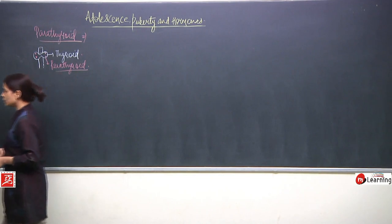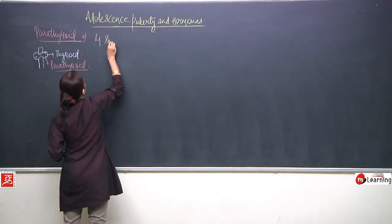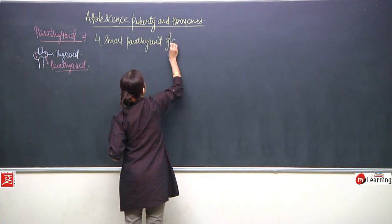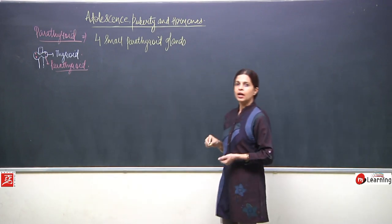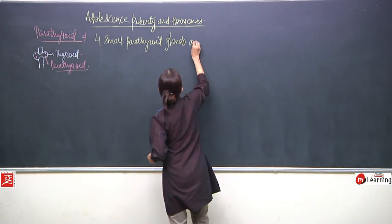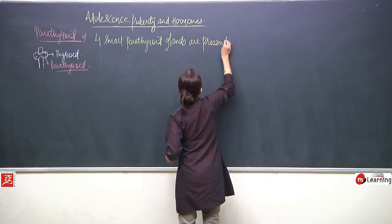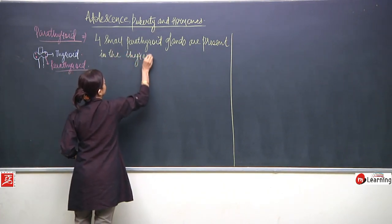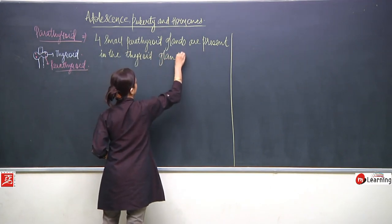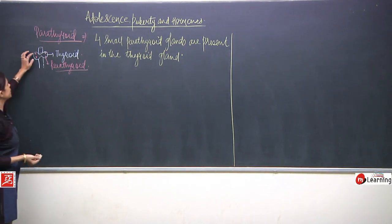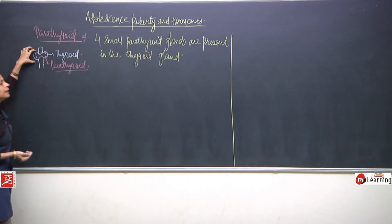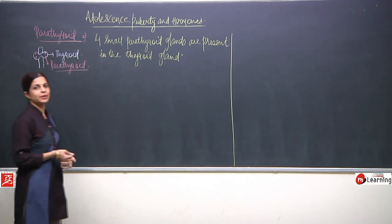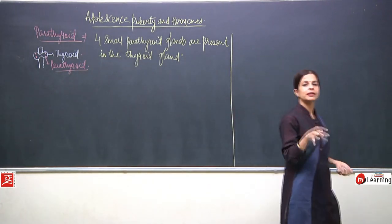Four small parathyroid glands are present — or I should say embedded — in the thyroid gland.